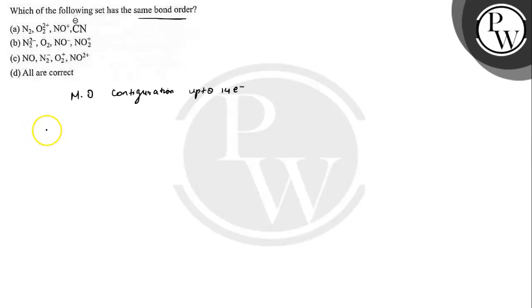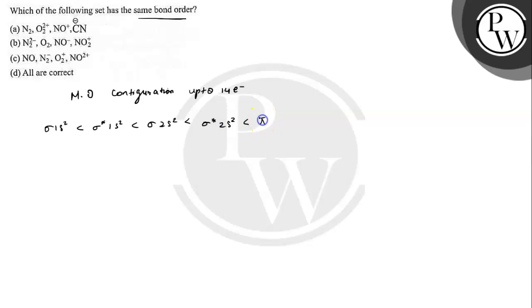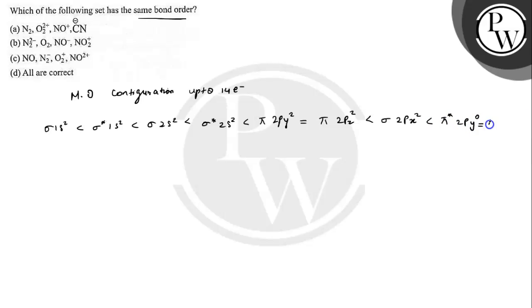The molecular orbital configuration up to 14 electrons is: σ1s² < σ*1s² < σ2s² < σ*2s² < π2py² = π2pz² < σ2px² < π*2py⁰ = π*2pz⁰.